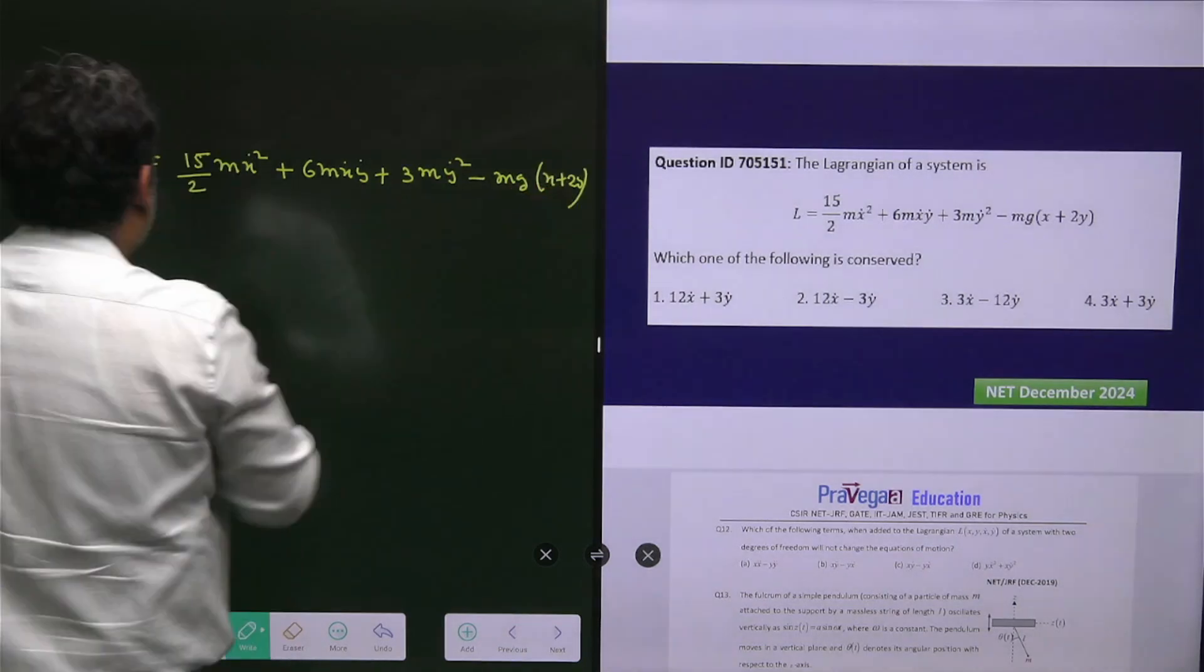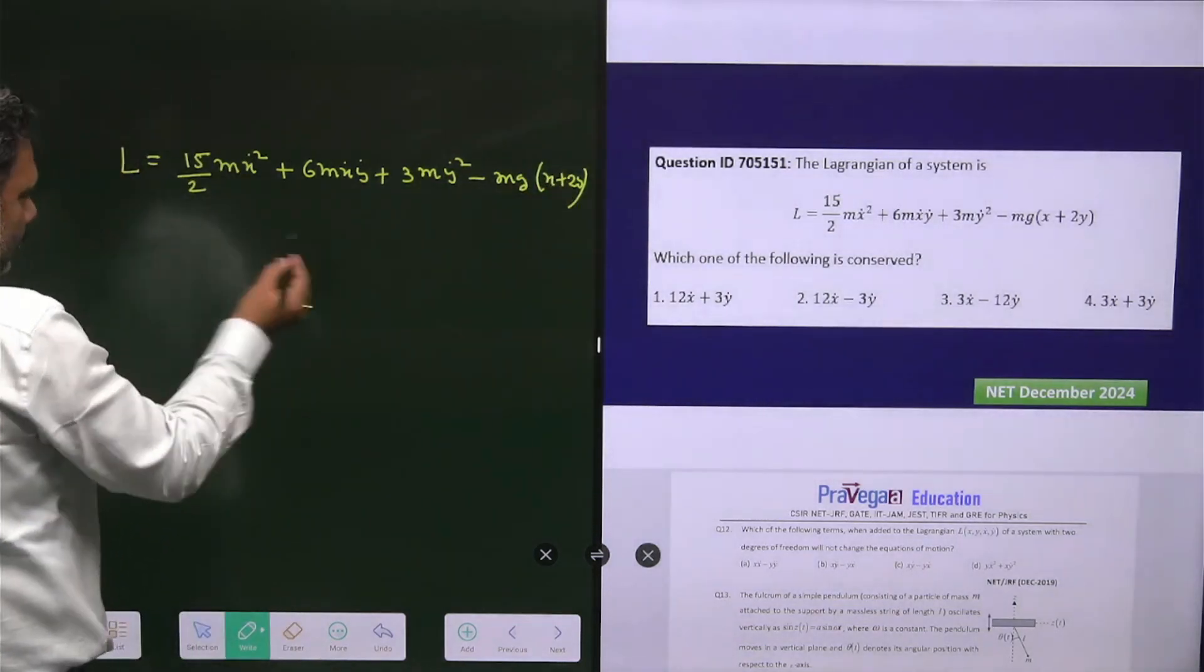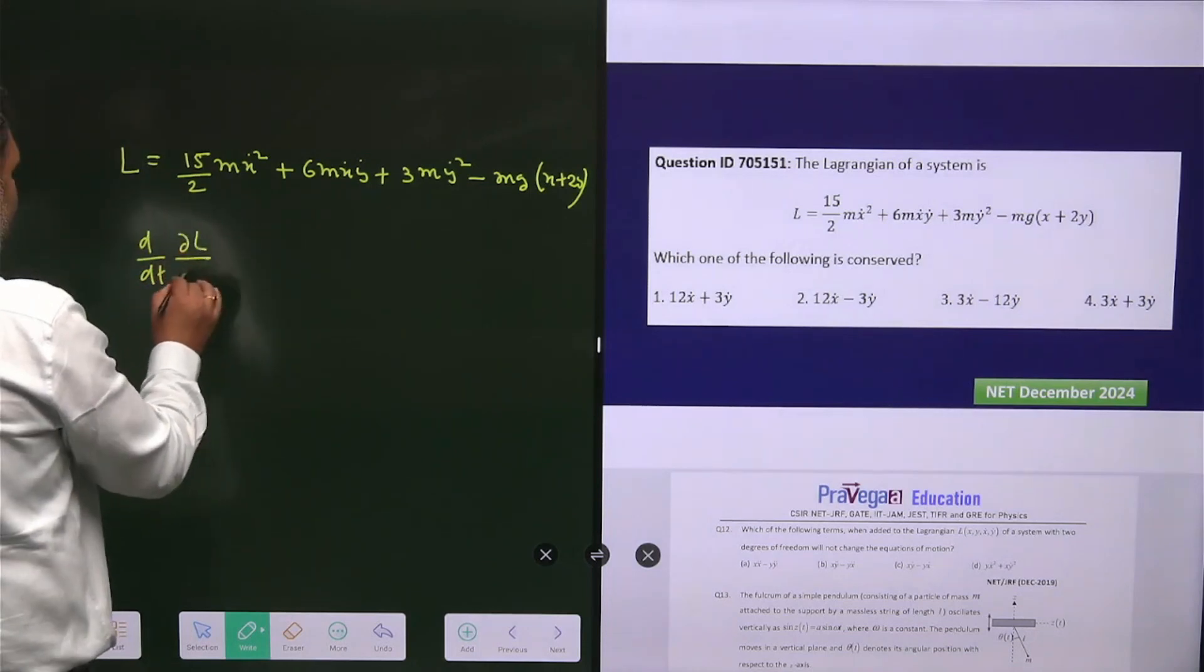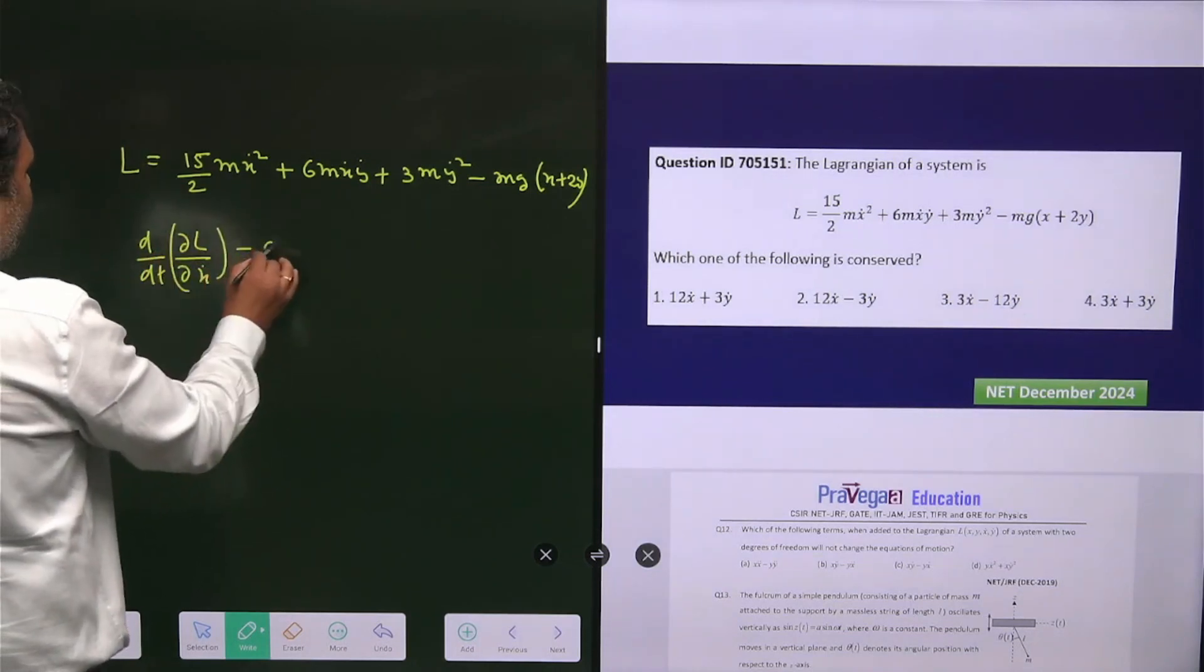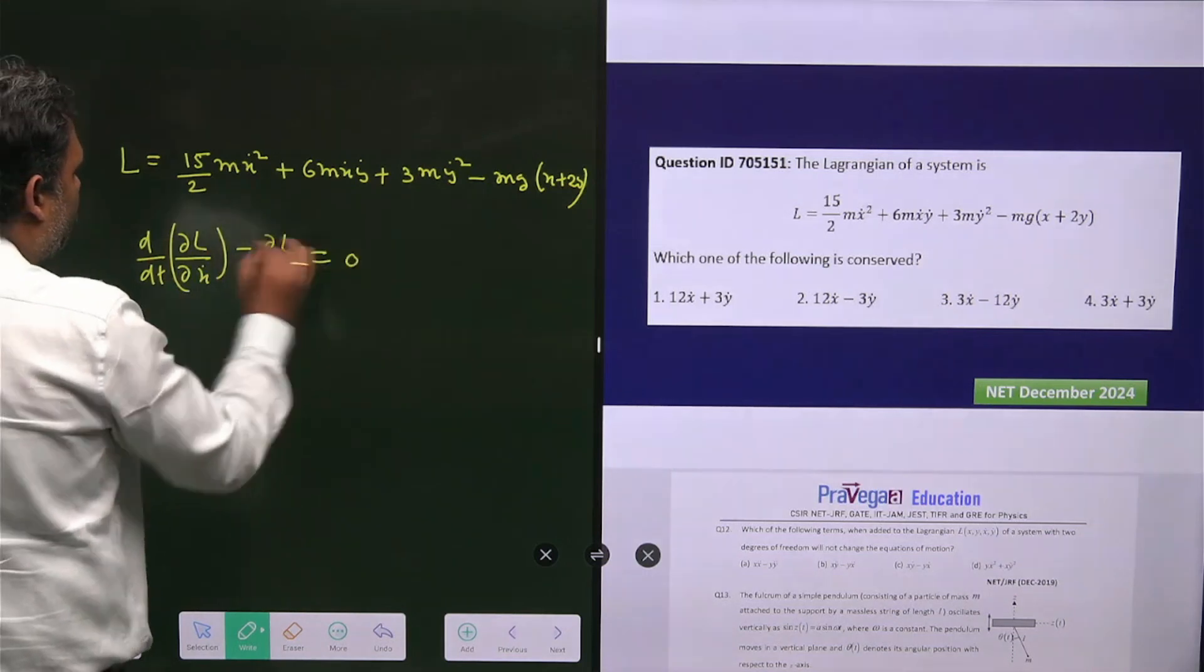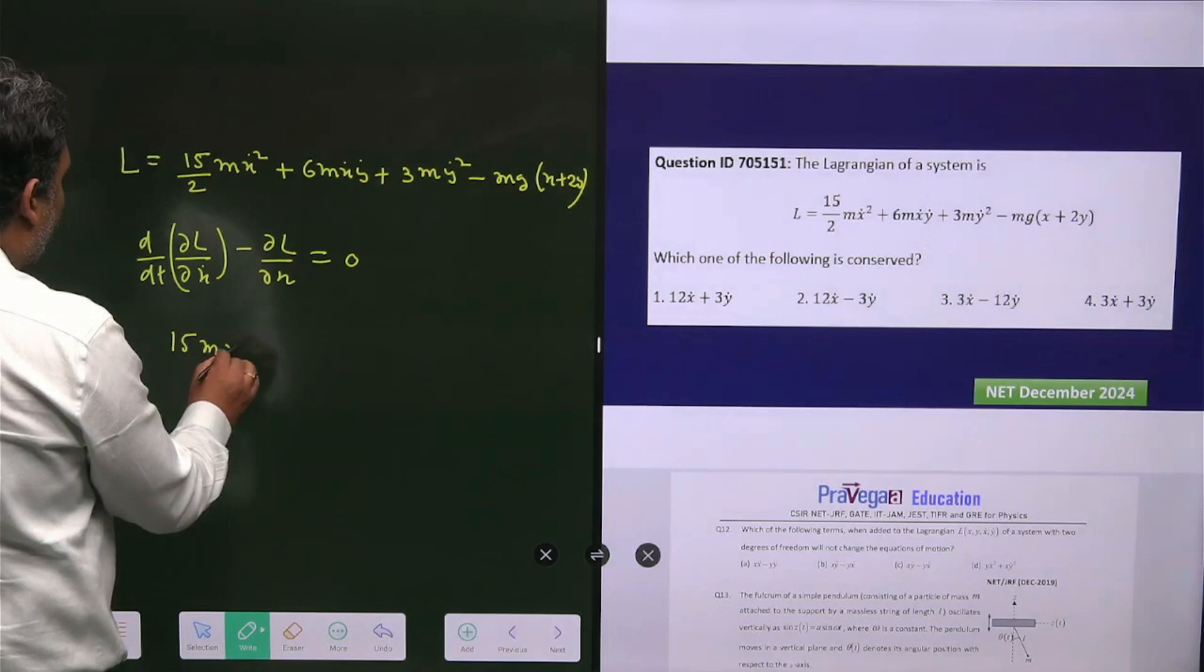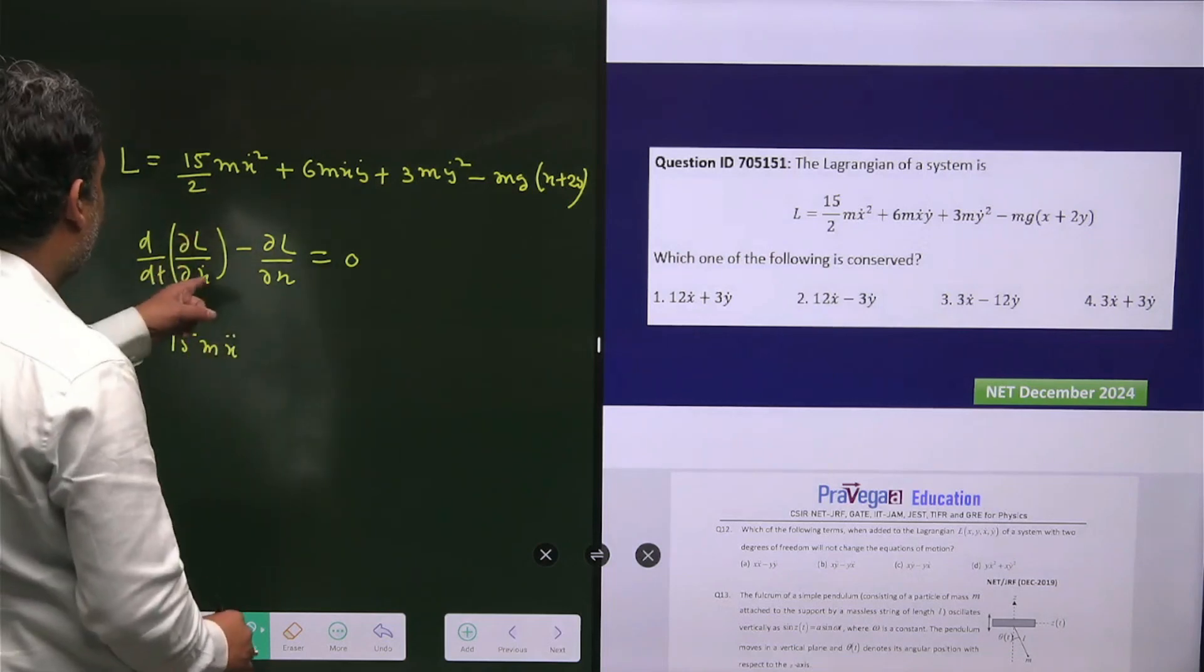First we'll write the Lagrange equation of motion for x: d/dt(∂L/∂ẋ) - ∂L/∂x = 0. When you solve it, you have 15mẍ.